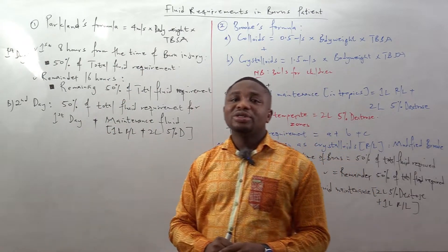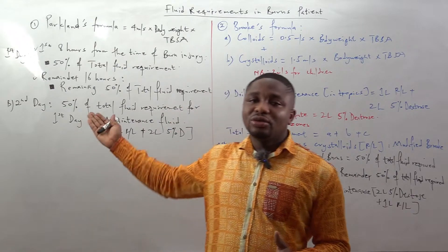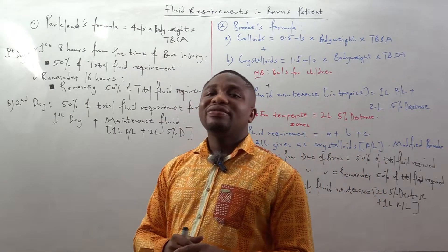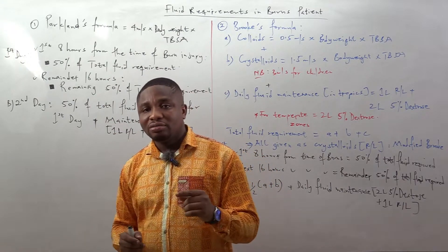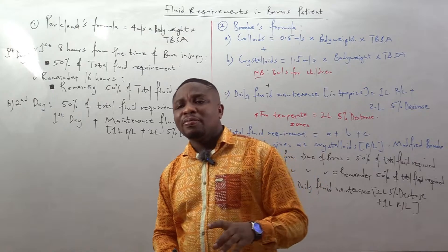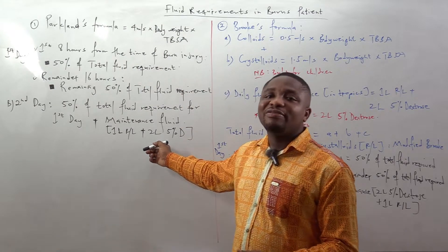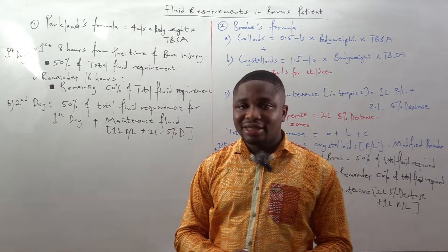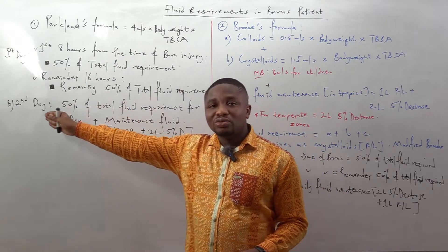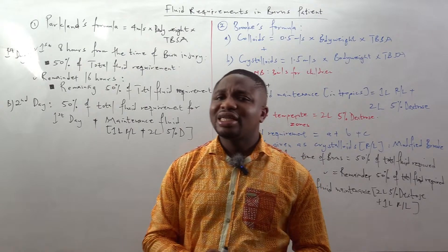Then in the next 16 hours, you give the remainder 50% of the total fluid volume calculated. On the second day, you give 50% of the total fluid volume requirement from the first day, plus the daily fluid maintenance. The daily fluid maintenance for those in tropical areas is a constant: two liters of 5% dextrose plus one liter of Ringer's lactate, giving three liters — in addition to the 50% of the total fluid volume from day one.